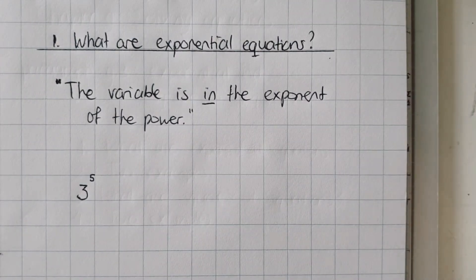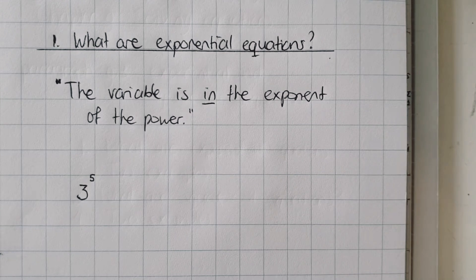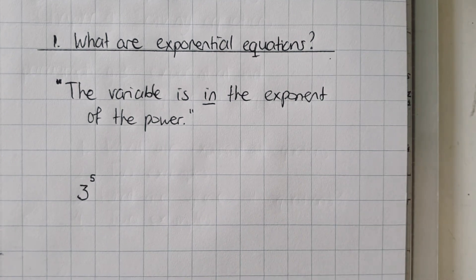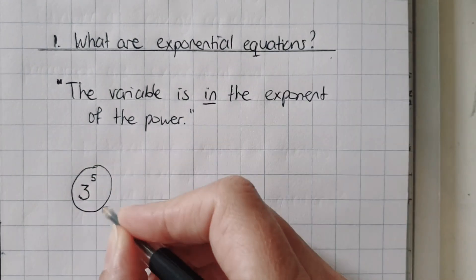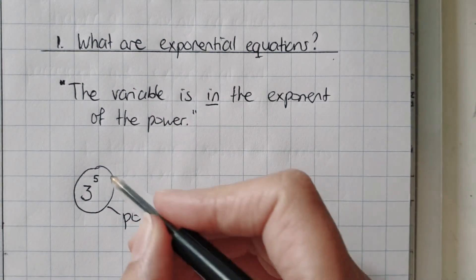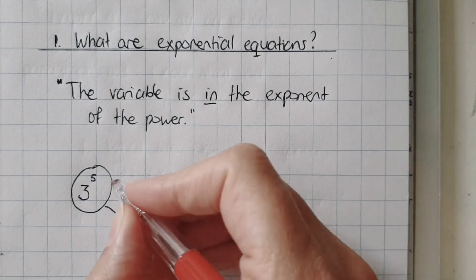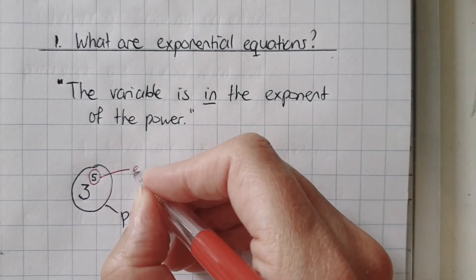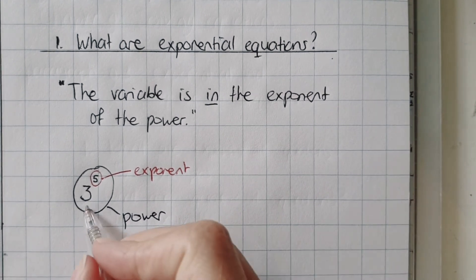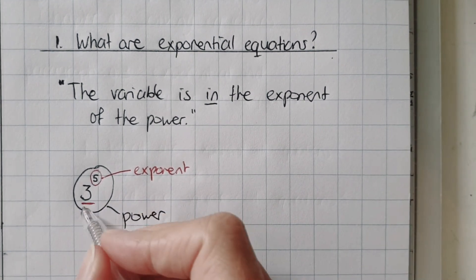What are exponential equations? You can talk about an exponential equation when the variable is in the exponent of the power. So, 3 to the power of 5 is my example. The whole thing is called a power, this little thing up here is called the exponent, and this big number is called the base.